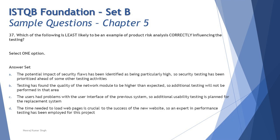Option C says users had problems with the user interface of the previous system, so additional usability testing is planned for the replacement system. That's also correct — we identified problems with the user interface, so we are doing additional usability testing for the replacement system.